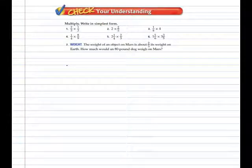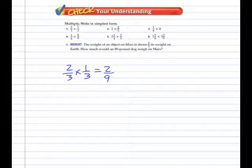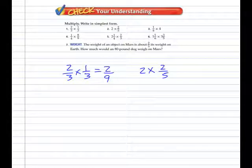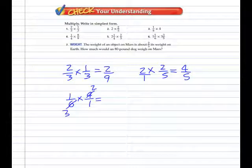Check your understanding. Two-thirds times one-third: we're going to get an answer less than two-thirds. Can't simplify, so numerator times numerator is two, denominator times denominator is nine — the answer is two-ninths. Example two: two times two-fifths — change two to an improper fraction, can't simplify, answer is four-fifths. Two times two is four, one times five is five. Example three: one-sixth times four — four over one. We can simplify by dividing both by two, giving an answer of two-thirds.